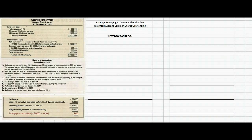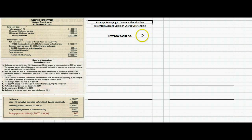Earnings per share tells a prospective buyer or an owner of a common share of stock how much earning power they buy when they buy one share. The formula is pretty simple: earnings belonging to the common shareholder divided by the weighted average common shares outstanding.